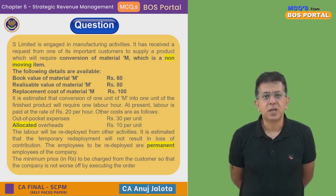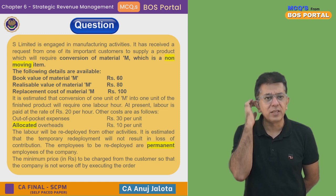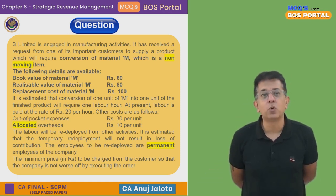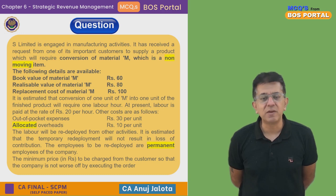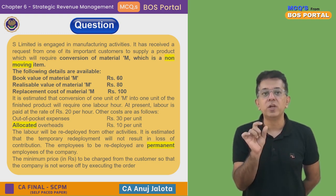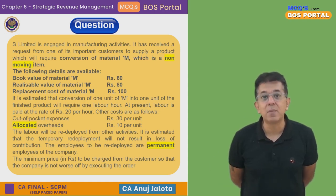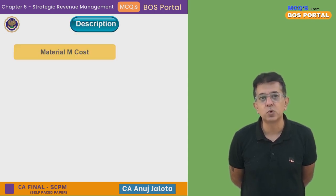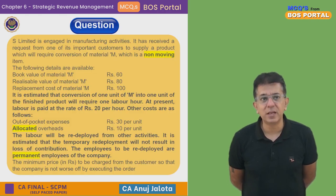Broadly there are four expenses: material, labor, out-of-pocket expenses, and allocated overheads. We are finding the relevant cost for this offer. For material M — if this offer had not come, what would you have done with it? It was of no use, so you would have sold it for ₹80. Now, instead of selling, you are using it — so you lose ₹80. Whatever you lose becomes your cost. Therefore, the relevant cost for material M is ₹80.